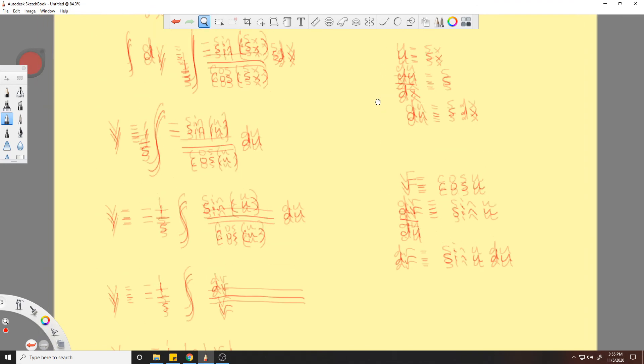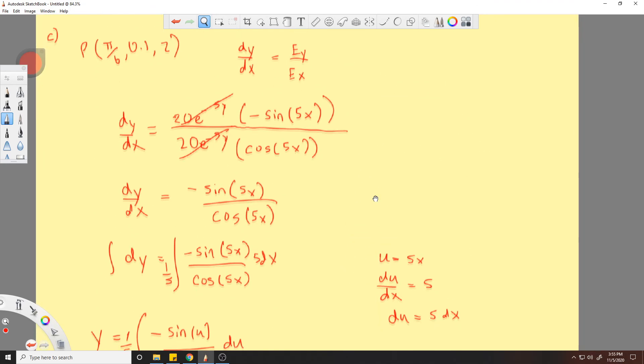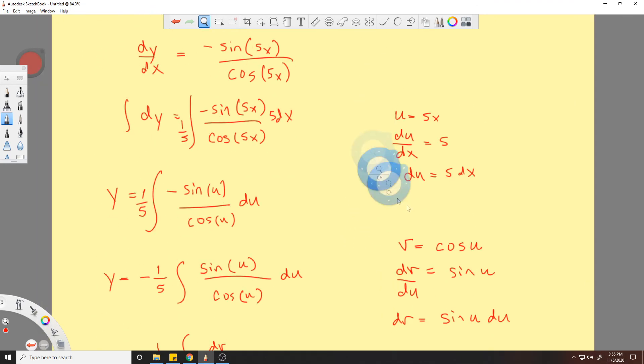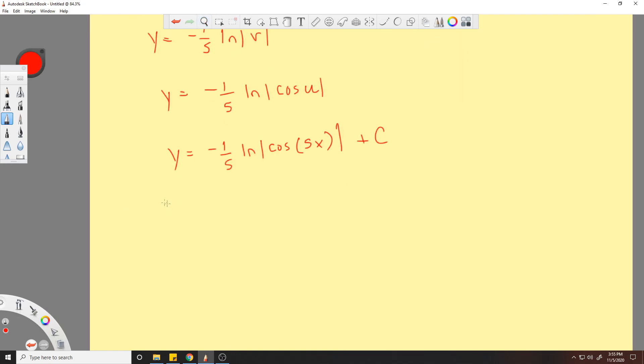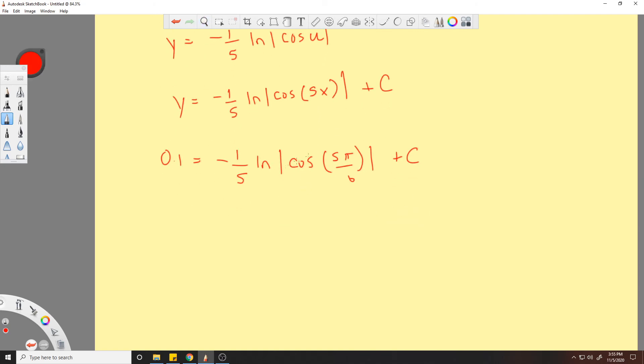Anyway, now we plug in our value of P. So 0.1 is the y, π/6 is the x. So 0.1 equals negative 1/5 ln of cos 5π/6. I'm just plugging in π/6 for x, and we're looking for a C.